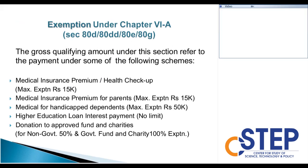Exemption under Chapter 6A also covers sections 80D, 80DD, 80E, and 80G. Medical insurance premium and health check-up — maximum exemption is 15,000. Medical insurance premium for parents — maximum exemption is 15,000. Medical for handicapped dependents — maximum exemption is 50,000. Higher education loan interest payment — there is no limit; it is only the interest part. Donations to approved funds and charities: if it is a non-government charity, 50% is allowed — for example, if you donate 1,000 rupees, only 500 is allowed. For government funds and charities such as the Prime Minister's fund and tsunami relief fund, 100% exemption is available.